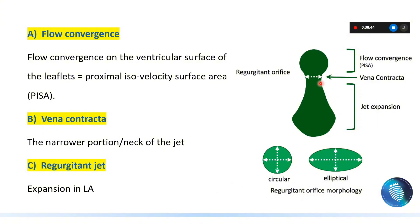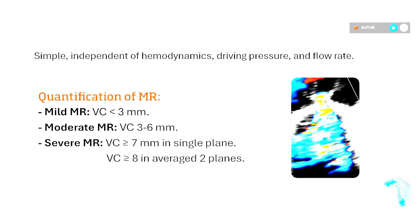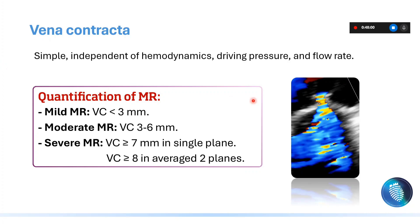Take care that the regurgitant orifice area through which the jet passes may be circular or may be elliptical, and this is a very important tip we will discuss and see how it affects our assessment in the later slides. The vena contracta is the narrowest neck of the jet — it is very simple and independent of hemodynamics.